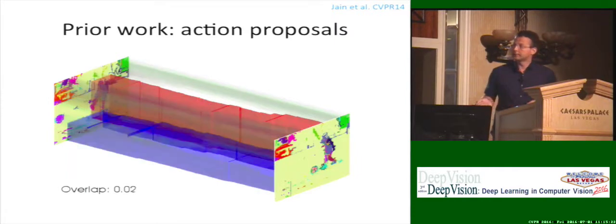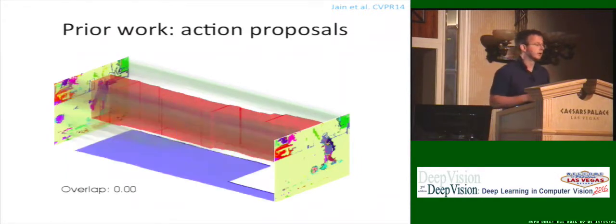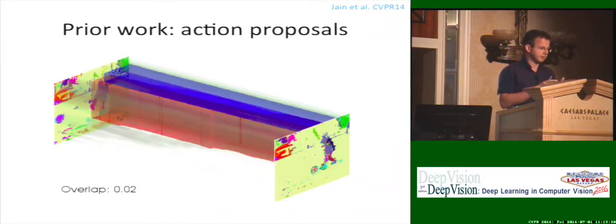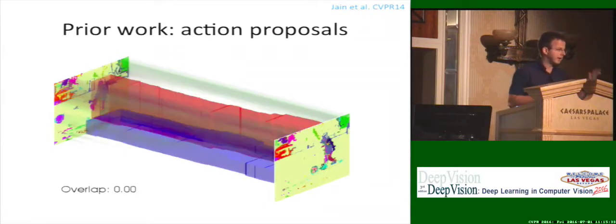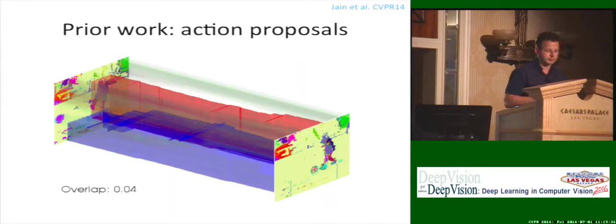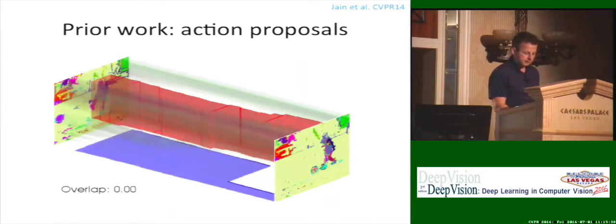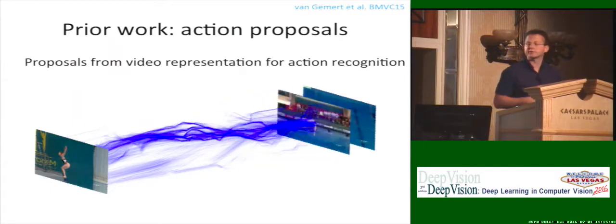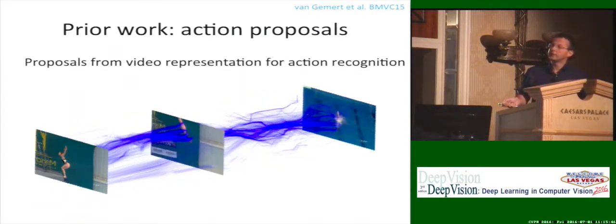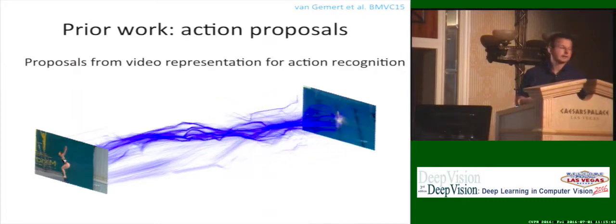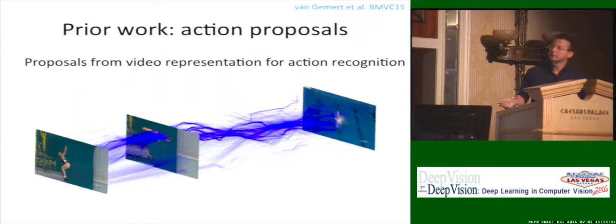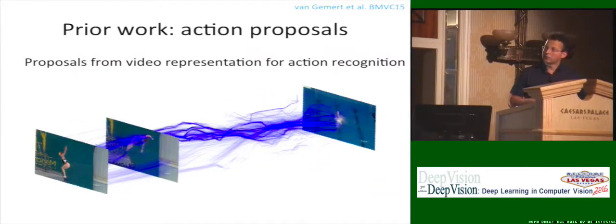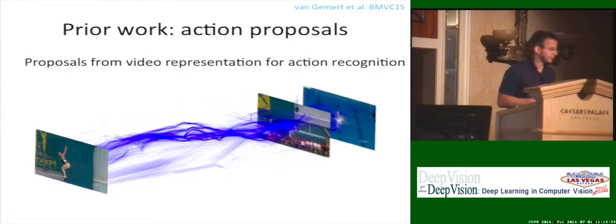This is a nice approach. The downside is that you separate localization from recognition. So first you have to generate all the proposals, encode each of the proposals individually with your favorite embedding, and then do the recognition of what the action is inside the proposal. Jan van Geemert, while at Amsterdam, had another observation. If we are representing a video with, let's say, improved dense trajectories, and we can see that the trajectories nicely follow the action, we might as well use this representation for generating the proposals as well.